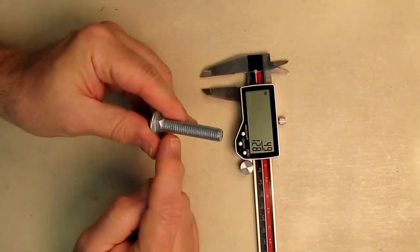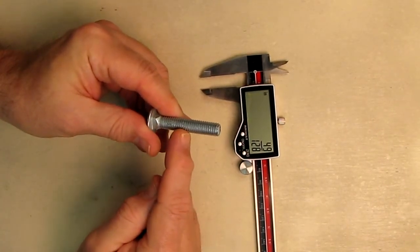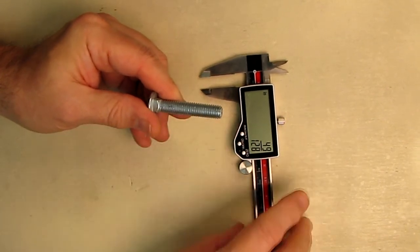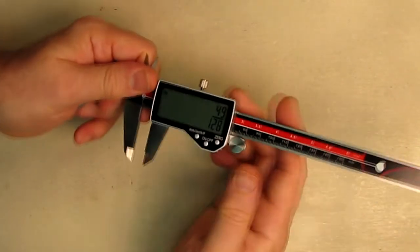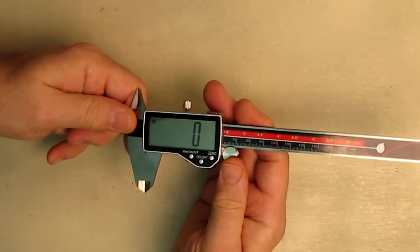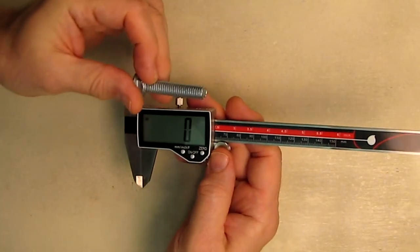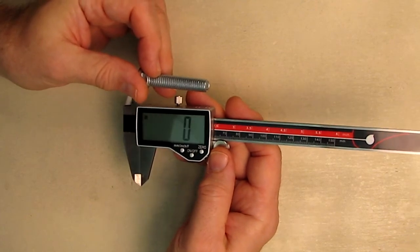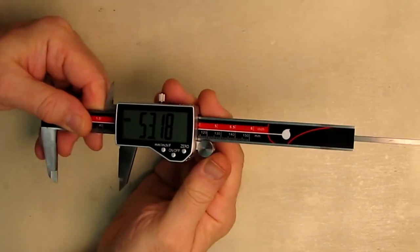Then I can count the threads on there per inch and then it's a 3/8-24. So this is really handy for measuring anything. If you lose or if you want to measure a bolt just like this and you don't know what it is, this is perfect for doing that.